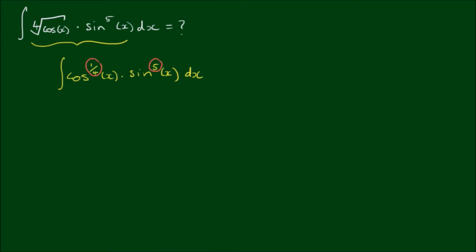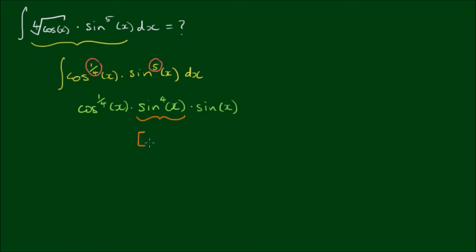That strategy is to reserve a sine of x and write everything else in terms of cosine of x. So let's write sine to the fifth power of x as sine to the fourth power by sine of x. Copy everything else down — cosine to the quarter power of x. Now this middle sine to the fourth power, let's consider this as sine squared of x, all squared.